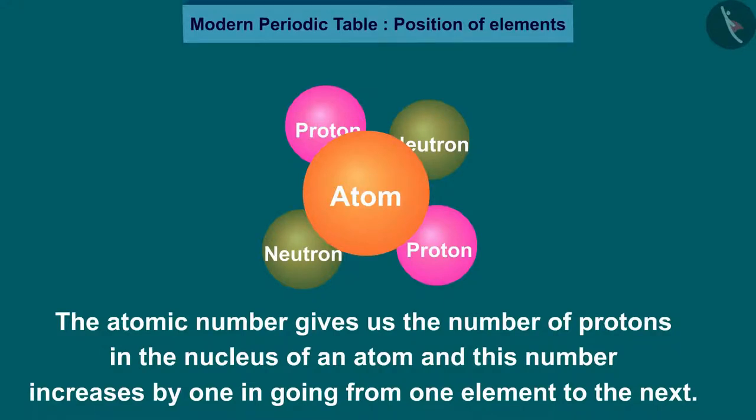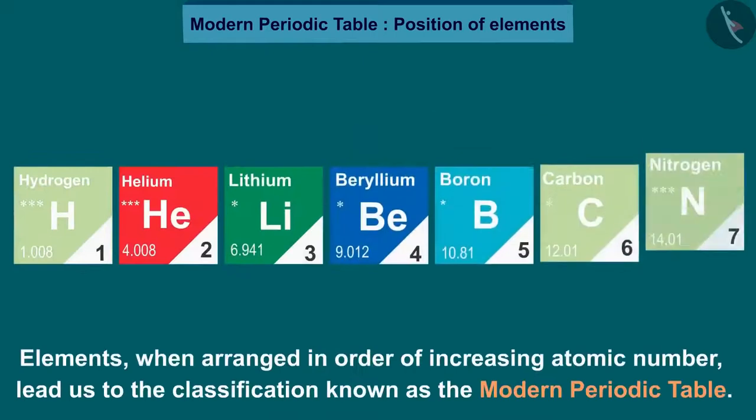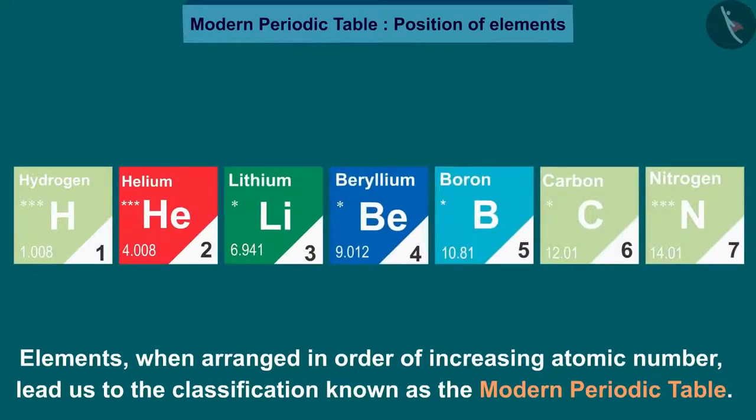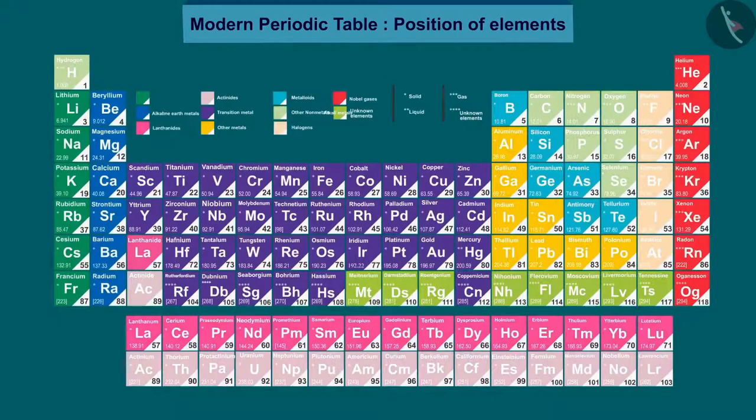Elements, when arranged in order of increasing atomic number, lead us to the classification known as the modern periodic table. Now, we can see that the modern periodic table takes care of three limitations of Mendeleev's periodic table.